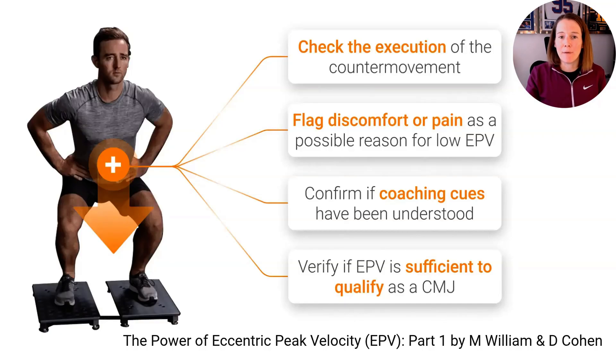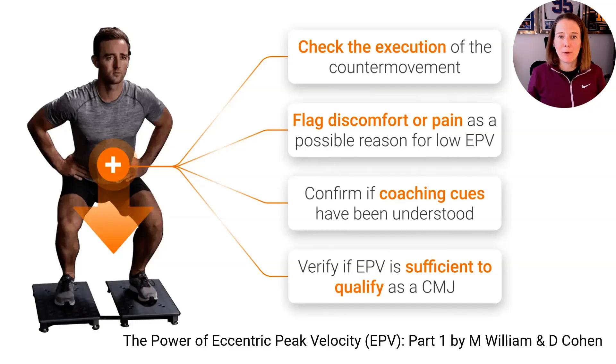Perhaps they either physically or mentally don't have that intent to jump as much as normal. So it can work as a flag from both a data quality perspective and also potentially a flag for monitoring. The key is to track this over time with individual athletes, establish what is typical for them, and analyze change from those norms to see when there might be a flag that something is going on with their fatigue.